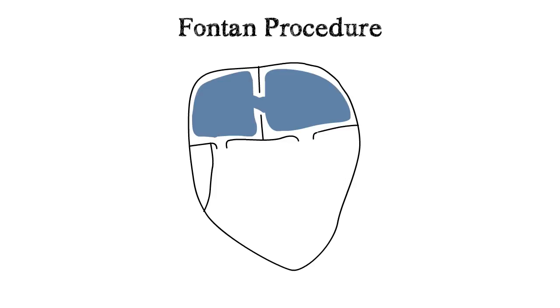During Fontan surgery, the surgeon first closes gaps between the atria, separating oxygenated blood and non-oxygenated blood. After this step, kids aren't so blue because there is no mixing of blood and all of the blue blood is directed to the lungs and not the body.